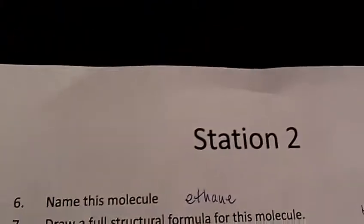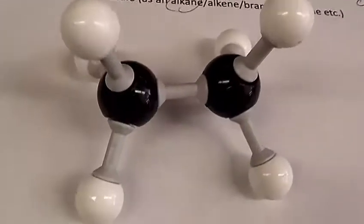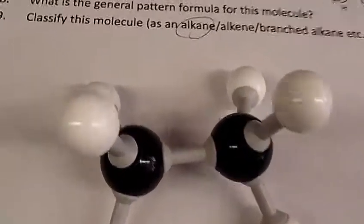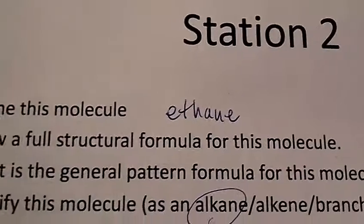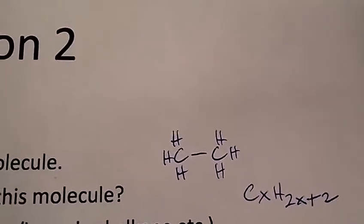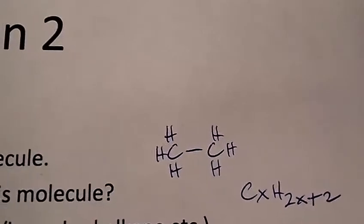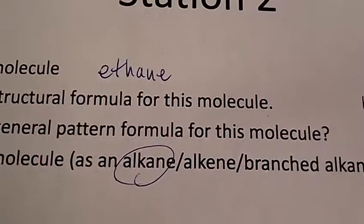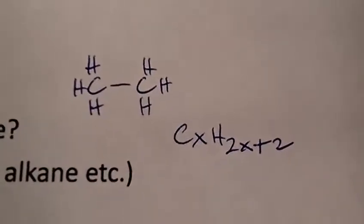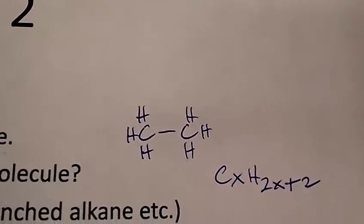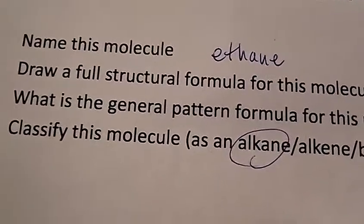Station two — this molecule has two carbons and six hydrogens. That is ethane, and the full structural formula looked like that with the two carbons and three hydrogens on each carbon. The general pattern for any alkane, including ethane, is going to be CxH2x+2. So there are two more than twice as many hydrogens as there are carbons in any alkane. Ethane is of course an alkane.